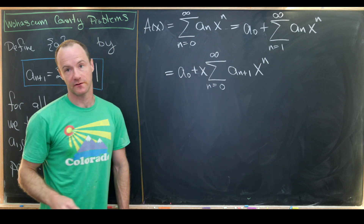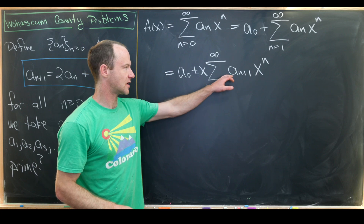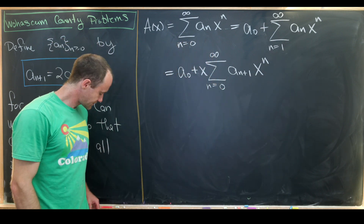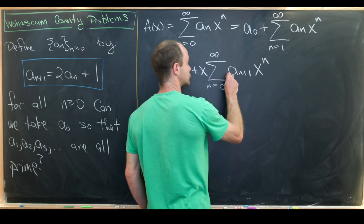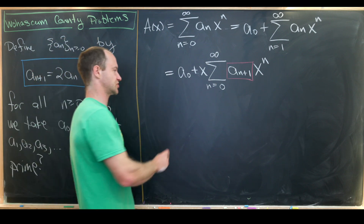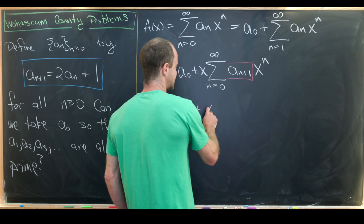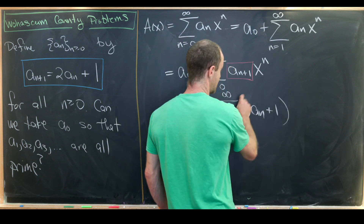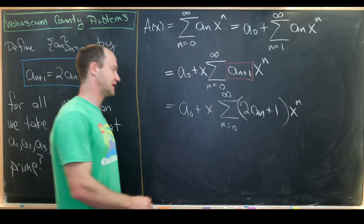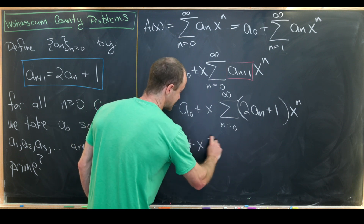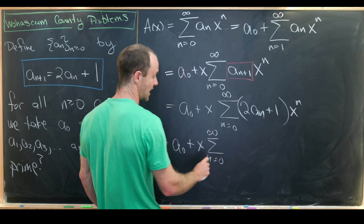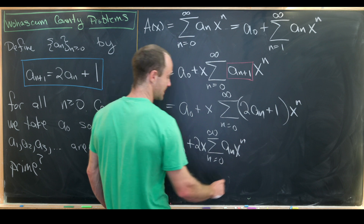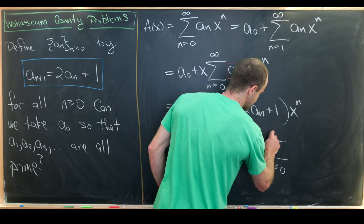I'll factor one x out front. Notice when n equals zero, I start at a_1, which is consistent. The reason to do this is so that we can apply the recursion to a_{n+1}. Applying the recursion gives us a_0 plus x times the sum as n goes from zero to infinity of (2a_n + 1) x^n. Splitting this: a_0 plus 2x times the sum of a_n x^n, plus x times the sum as n goes from zero to infinity of x^n.